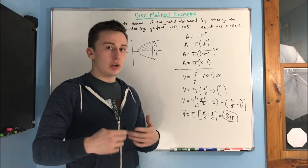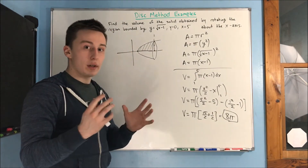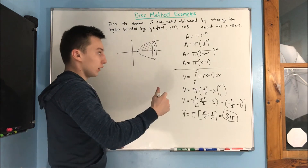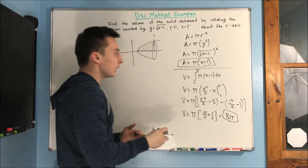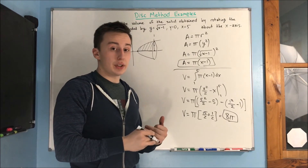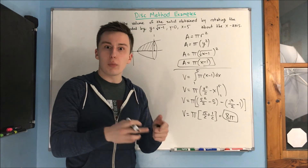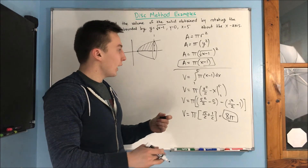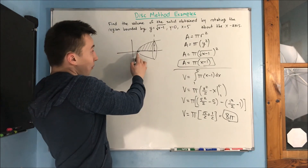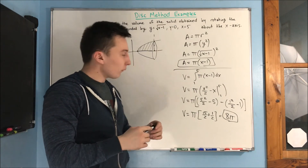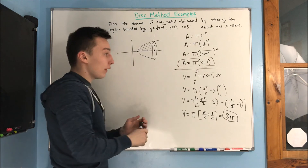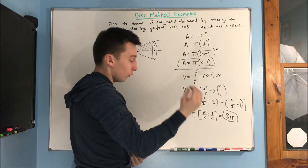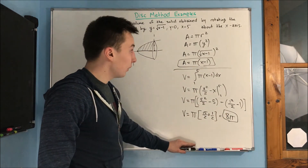The only thing you might struggle with is understanding what is going on. The area we found tells us the area of each cross section. You might wonder how one area formula gives more than one area — it is because it is a function of x, so it tells us the area at any point on the interval. When we integrate, we add all those areas up and get our volume. It is as simple as that.